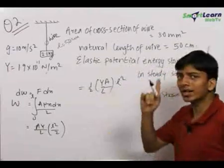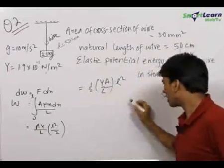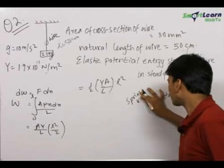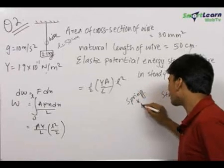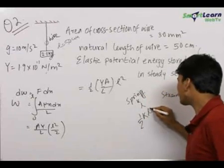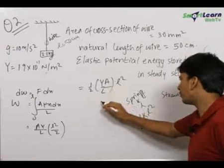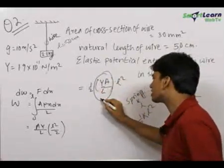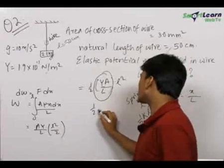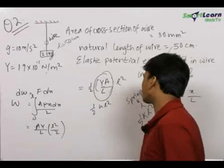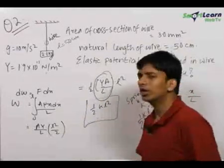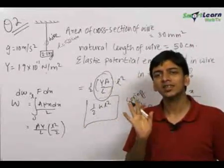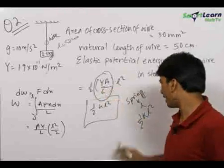Using the spring concept, a spring of spring constant k that undergoes extension L has potential energy ½kL². The same formula applies here: YA/L can be treated as the spring constant, so the elastic potential energy is ½kL². This is the best method to find the elastic potential energy stored in a wire — always treat it as a spring of spring constant YA/L.